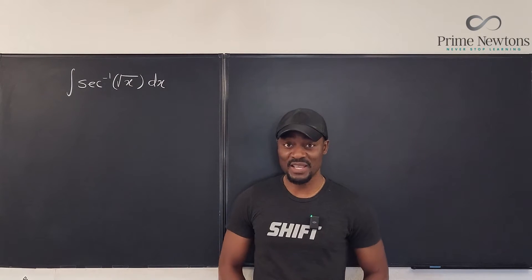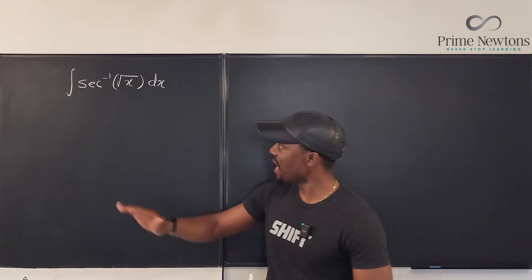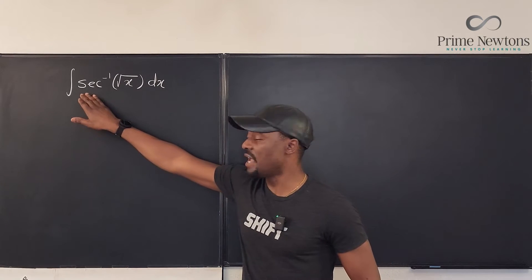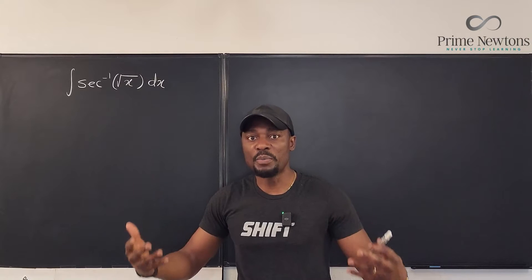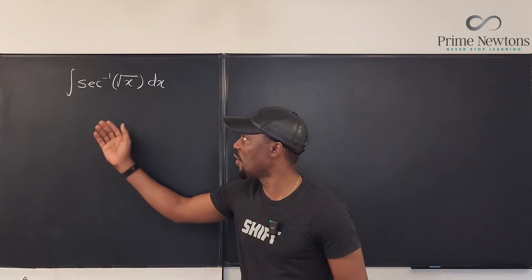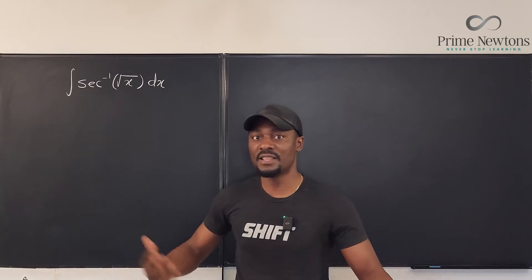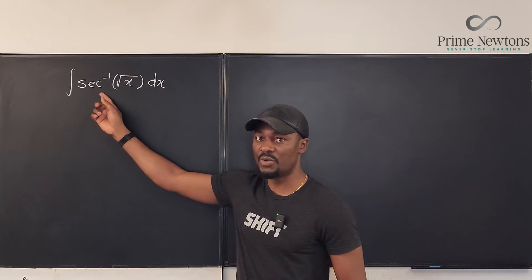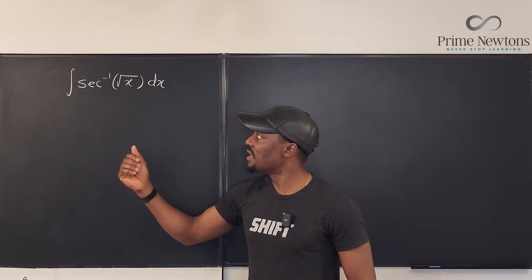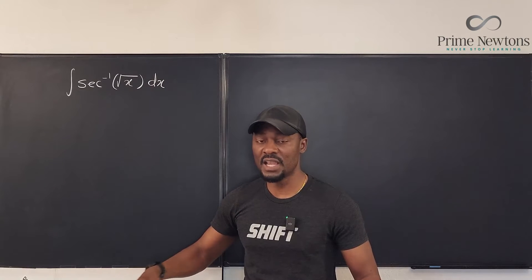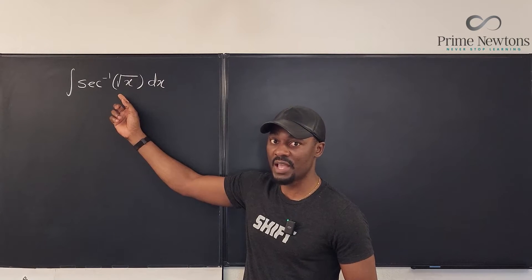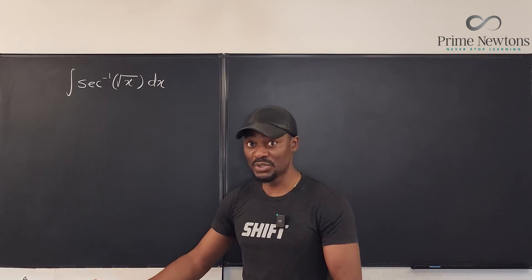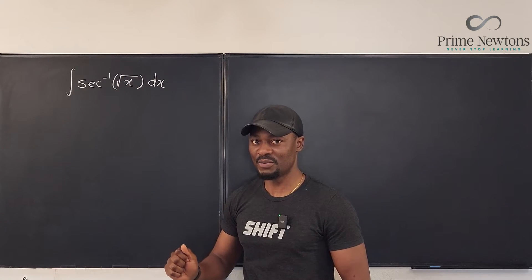Welcome to another video. Let's do some quick integration. What we have is the inverse secant of the square root of x. Inverse trig functions don't have a popular or known antiderivative, so you can't say 'if I integrate inverse secant of anything, this is what I get.' You have to work through the process. Because you cannot find the antiderivative of inverse secant directly, and the argument is the square root of x rather than just x, you need to do a u-substitution first.